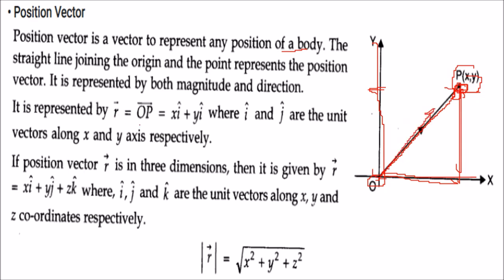It is represented by R, this is OP, and the R vector is xi plus yj, where x and y are the Cartesian coordinates and i and j are the unit vectors along the x and y axis respectively.